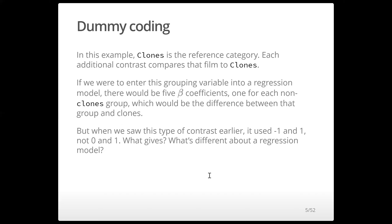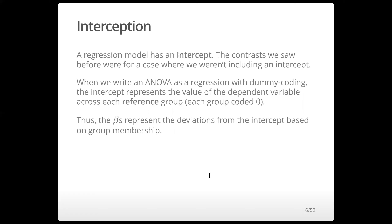When we saw this type of contrast earlier, it used negative one and one instead of zero and one. The difference is that the regression model has an intercept. The contrast we saw before was for a case where we weren't thinking about things in terms of an intercept. When we write an ANOVA as a regression with dummy coding, the intercept represents the value of the dependent variable for the reference group — the group coded as all zeros. Thus, the betas represent the deviations from the intercept based on group membership, or the difference between that group and the reference group.